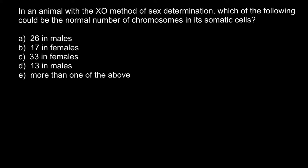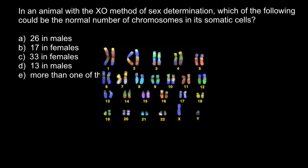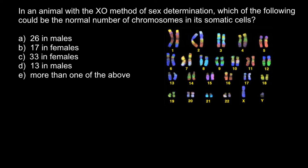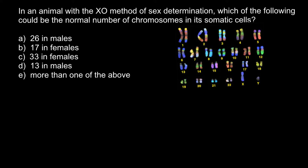First, I want to use the example of the human karyotype to explain today's problem. Here we have 23 pairs of chromosomes. Looking at this karyotype you can tell if it is male or female because of these two chromosomes — here we have X and Y chromosomes, which means this is a male. When we have a male, the male genotype would be X and Y.